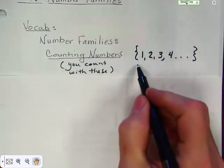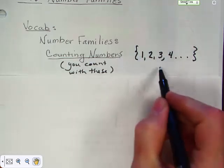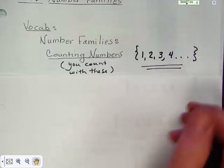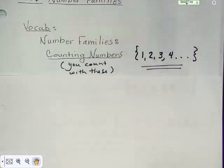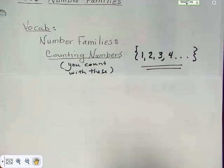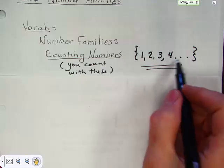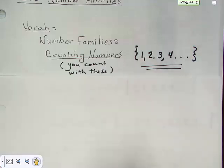A list of the counting numbers would be shown in brackets — brackets are usually used for listing numbers. A list of the counting numbers would be one, two, three, four, and these three dots mean it goes on forever.